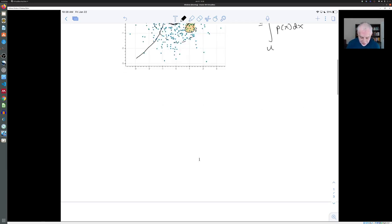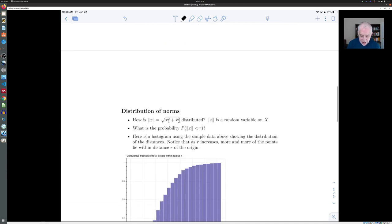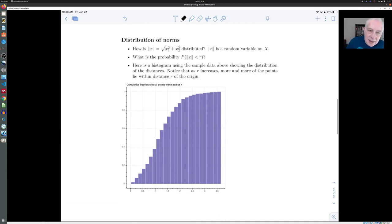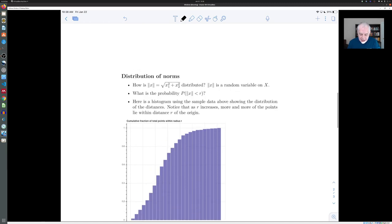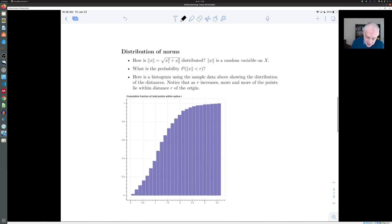Now, if you imagine that you were studying this situation, it's hard to work with these two independent numbers, right? I mean, what you really maybe like to know is how big is the error overall. And that would be like asking, how is the norm of x, the square root of x one squared plus x two squared distributed. And this is a great example of a random variable.